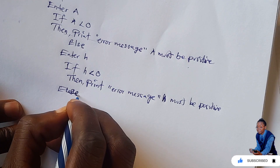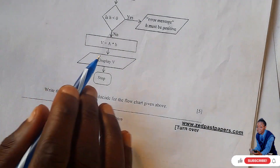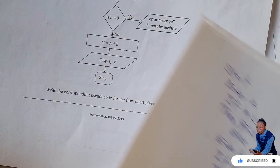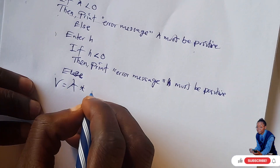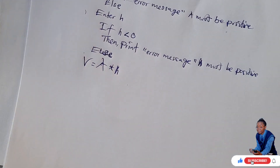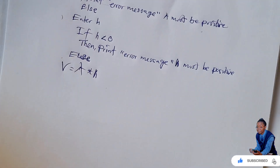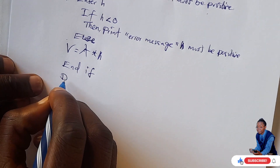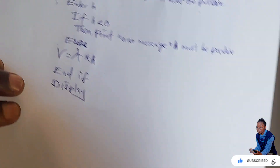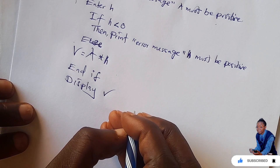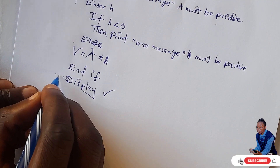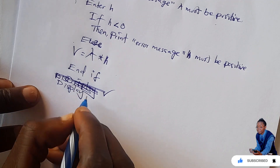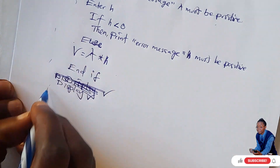Else, we now calculate. Just align this else with the previous else. V equals A times H, which is area multiplied by height. Then after here you see there is display, then stop. So you say end if, then display V — which is volume. Then in this same line as where you started, you say stop.